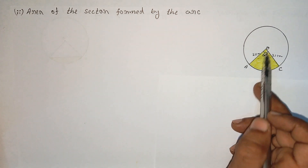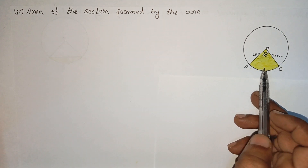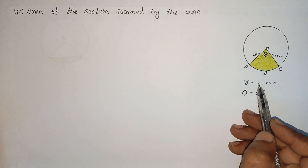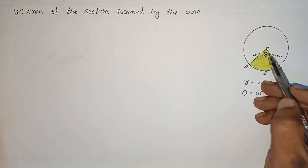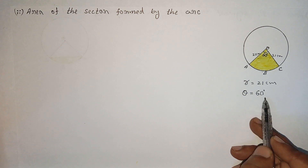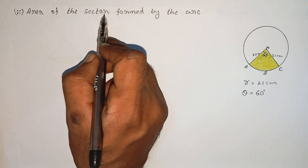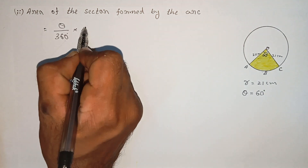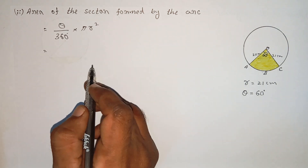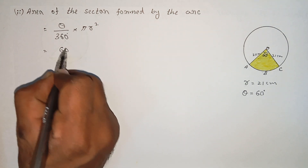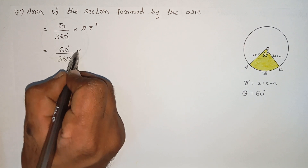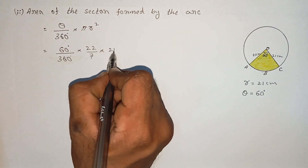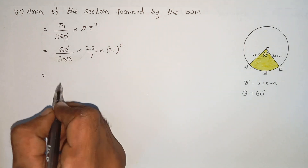Now I am going to find the area of the sector OABC. Radius is equal to 21 cm and the central angle is 60 degrees, so theta is equal to 60 degrees. The formula for area of sector is theta divided by 360 degrees into pi r squared. Substituting: theta is 60 degrees, radius is 21.